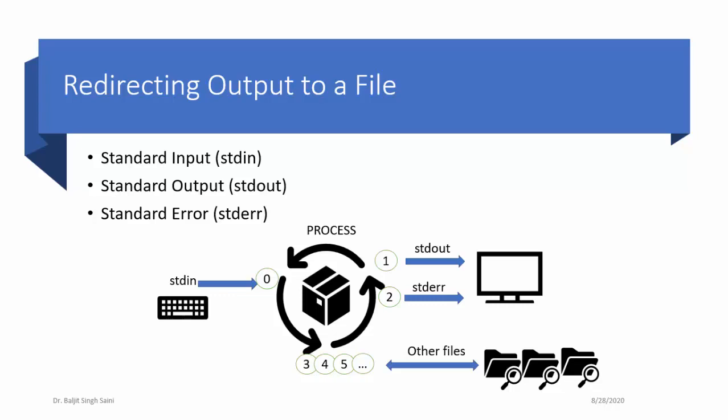Apart from channels 0, 1, and 2, which are reserved, there are other channels from which the process can either receive input or send output. For all user-created files, the channel numbers or file descriptors used are 3 and above. The direction is important: for standard input, the direction is towards the process. The process can only send data out on stdout and stderr. Whereas for channels 3, 4, 5, and above, the process can either receive or send data — it can read from or write to user-created files.